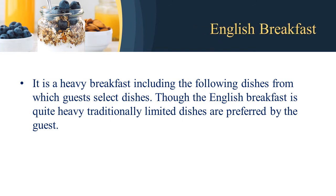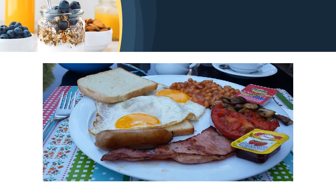The next type is English breakfast. It is a heavy breakfast from which guests select dishes. Though English breakfast is quite heavy, traditionally only limited dishes are preferred by the guest. In this picture you can see a full English breakfast with sausages, egg preparations, jam and marmalade, bread toast, and grilled tomatoes.